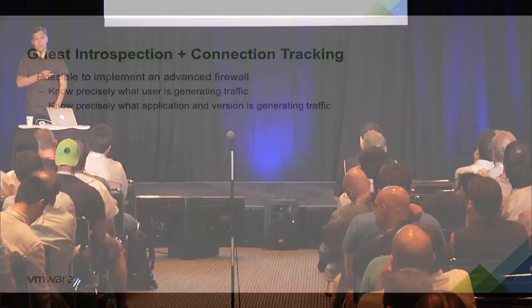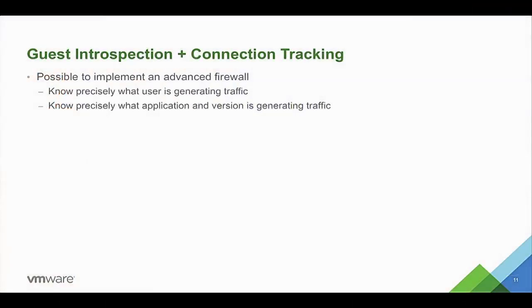If you take this connection tracking and add the guest introspection and state inference we talked about earlier, we can implement a really advanced firewall. Because we know precisely what user or application is generating the traffic, we can make very fine-grained decisions as opposed to just basic ones based on the 5-tuple.